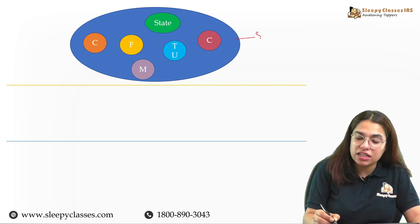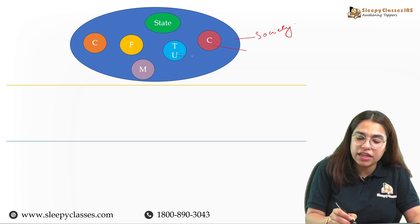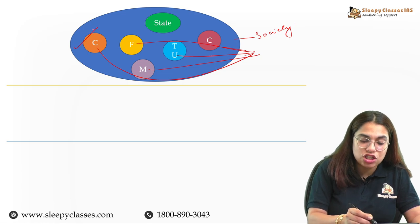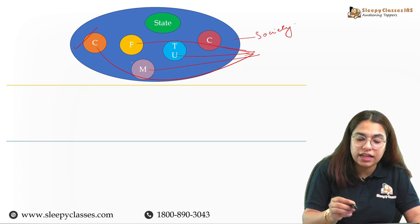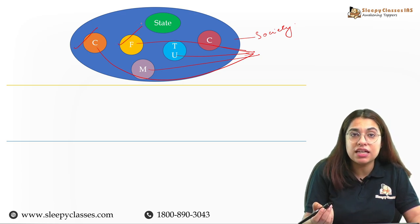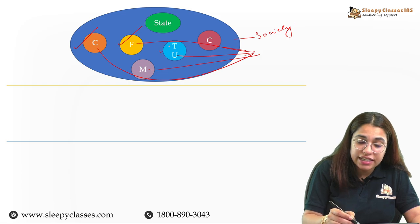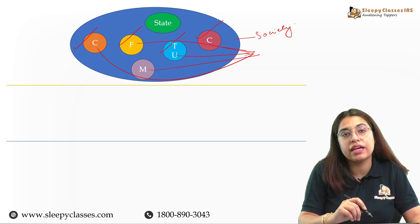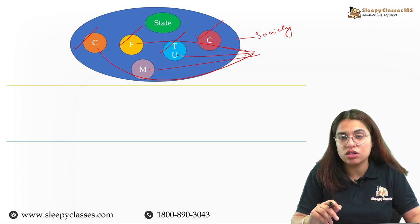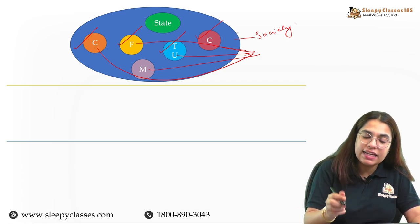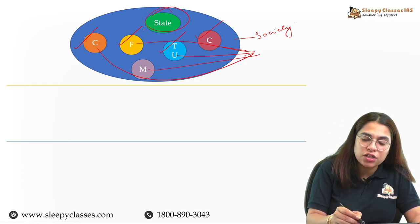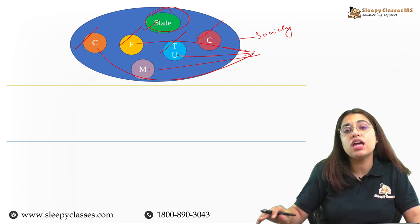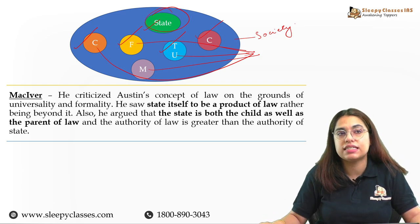Laski further says that even though there are many associations, the state plays a keystone role in the entire architecture of society because as an association, it safeguards the rights and interests of citizens, enabling them to play important roles in other associations. The state also plays a coordinating role amongst various associations, and if any kind of conflict emerges, the responsibility to resolve it rests with the state. So in larger society's architecture, various bodies — church, film and media, trade unions, corporations, educational bodies — exist, and it is the state that plays this coordinating role among them.